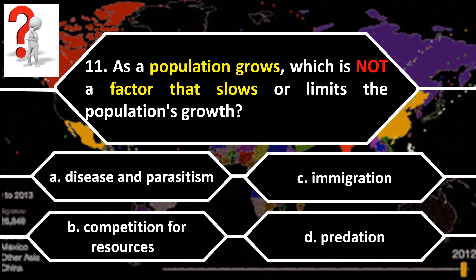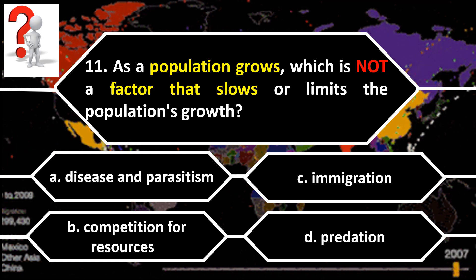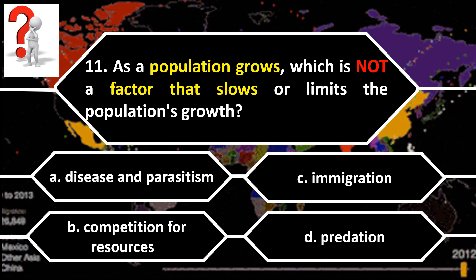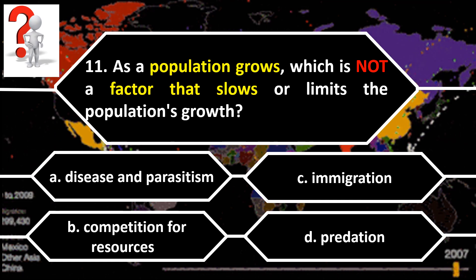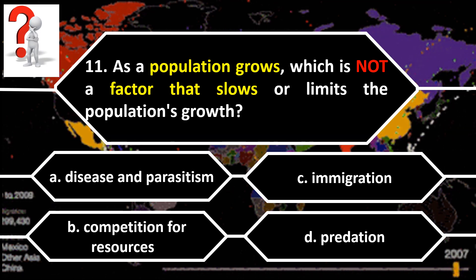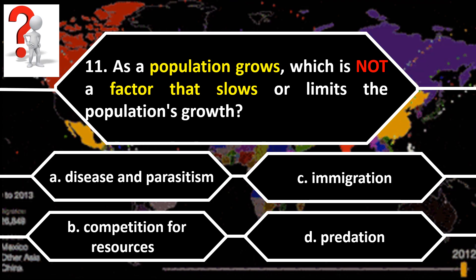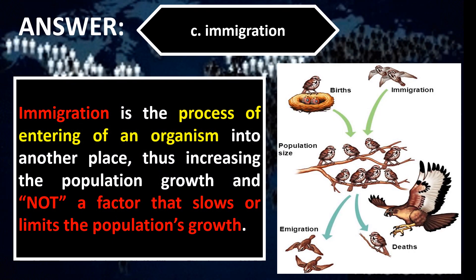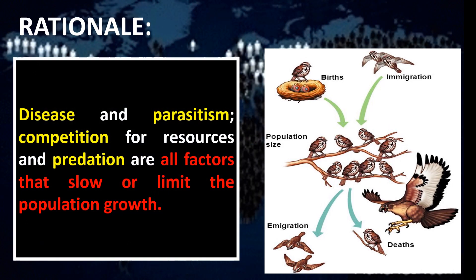Number 11. As a population grows, which is not a factor that slows or limits the population's growth? A. Disease and parasitism. B. Competition for resources. C. Immigration. D. Predation. The correct answer is letter C, Immigration. Immigration is the process of an organism entering another place, thus increasing the population growth and is not a factor that slows or limits population growth. Disease and parasitism, competition for resources, and predation are all factors that slow or limit population growth.